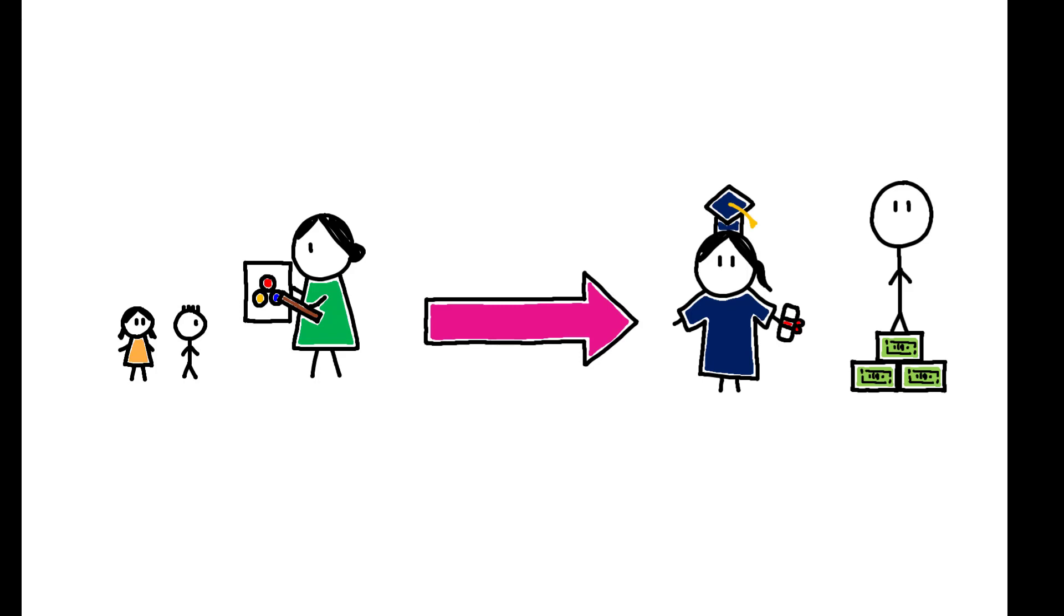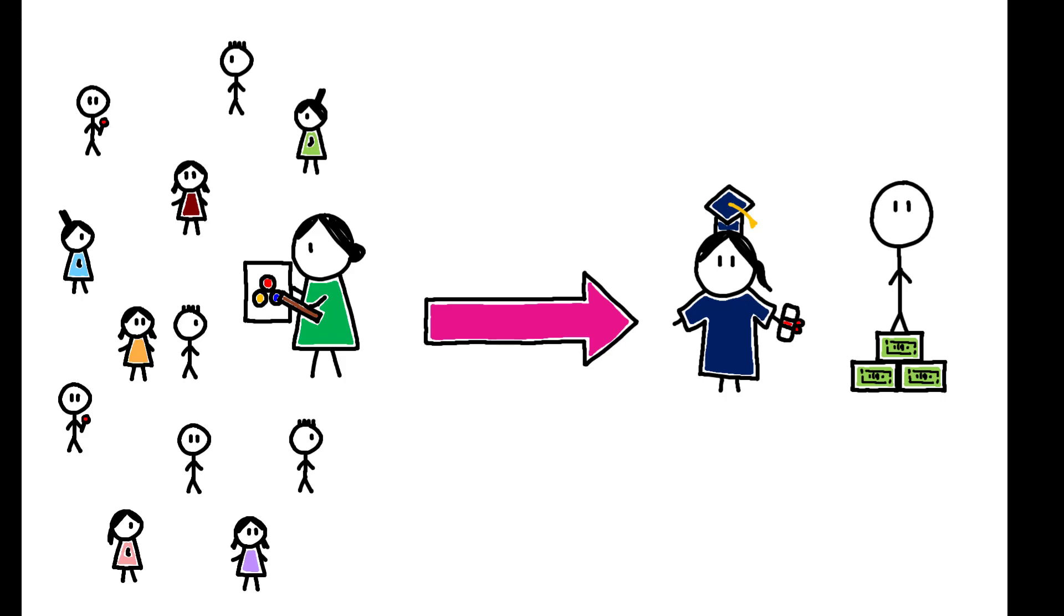The data span nearly 22.5 million children born between 1950 and 1980 and result in a sample that is 10,000 times larger than the surveys that are typically used.